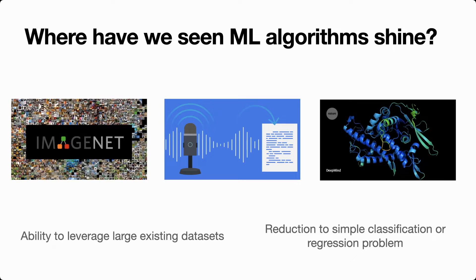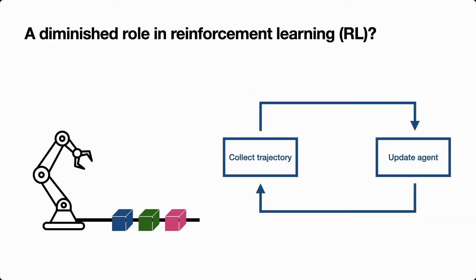But this story doesn't quite work so well when the problem that we care about isn't of prediction. This is roughly the situation in reinforcement learning where we want to learn useful policies through a feedback loop where the agent continually interacts in an environment, collecting trajectories and using these trajectories to update the agent.